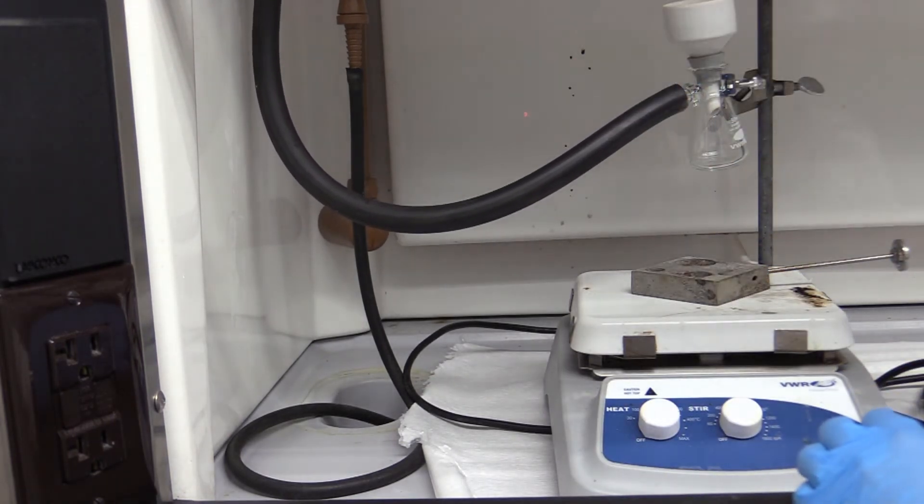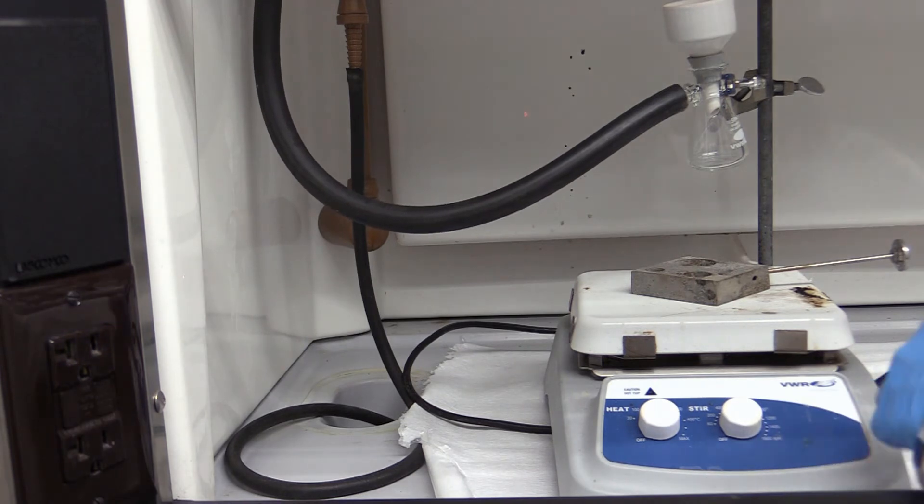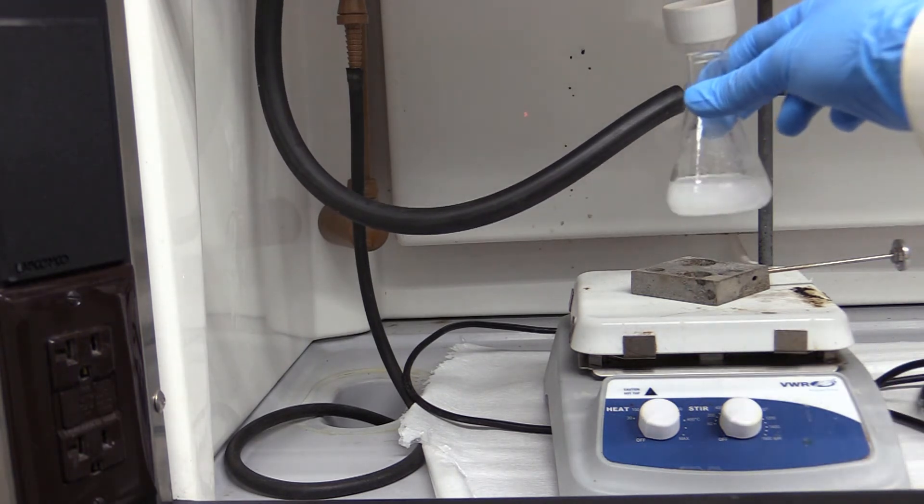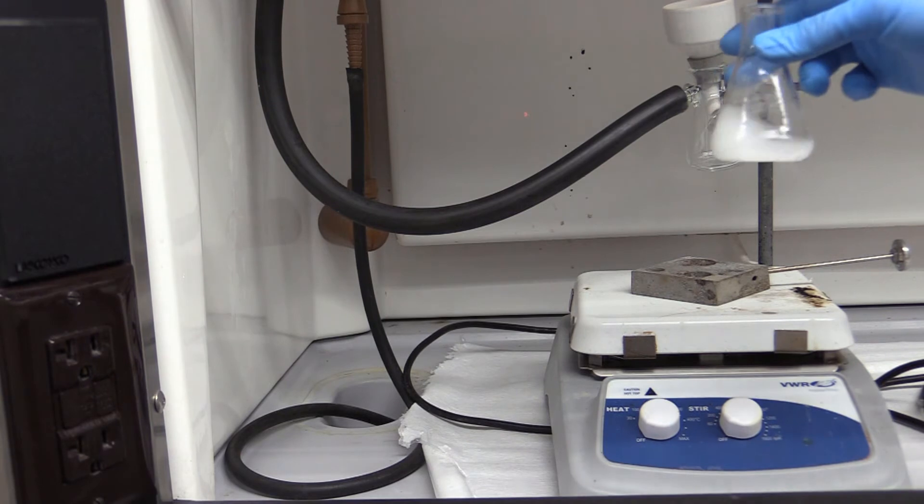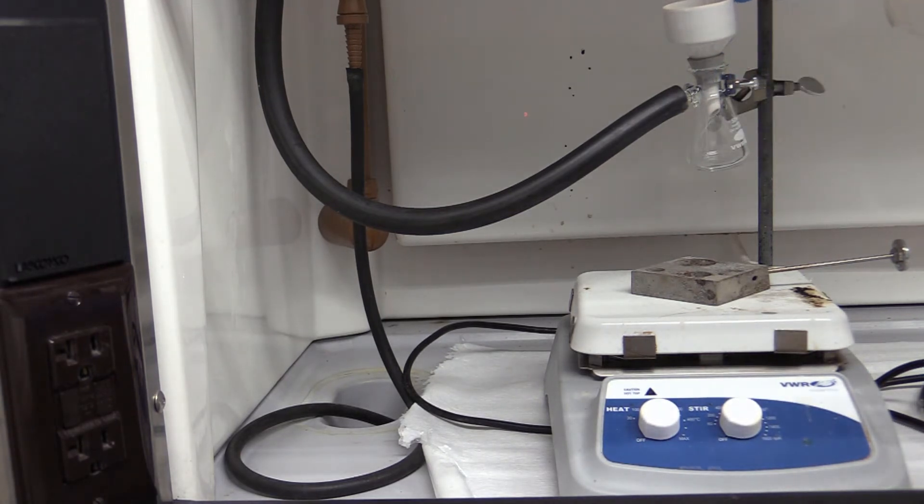You will need filter paper. Wet the filter paper with your solvent once you put it in the funnel to create a seal. Turn the vacuum on and swirl the flask and pour it into the filter. Use a little bit of the cold solvent to transfer the rest of the crystals into the filter.